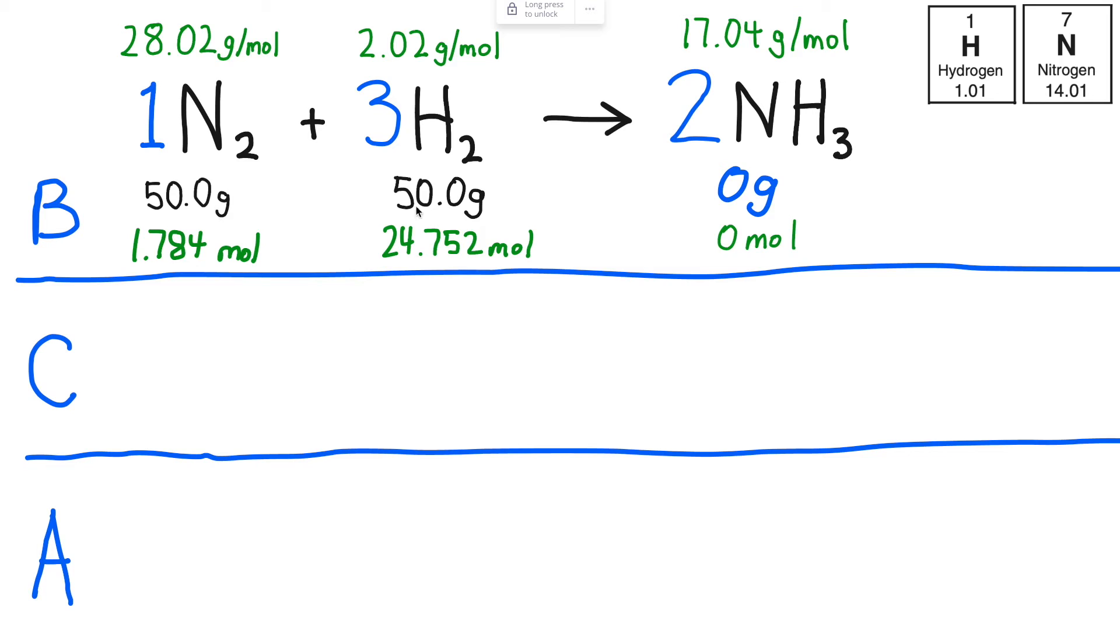I really want to highlight the mole amounts present because that's quantity. Notice that although we have equal masses here, in terms of quantity we have many more H2 molecules than N2 molecules. And that's because an N2 molecule is pretty massive compared to an H2 molecule. So I've got a lot more H2 in that 50 grams than I do N2.